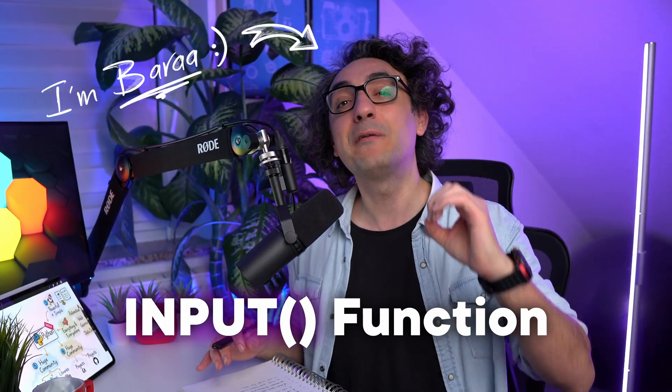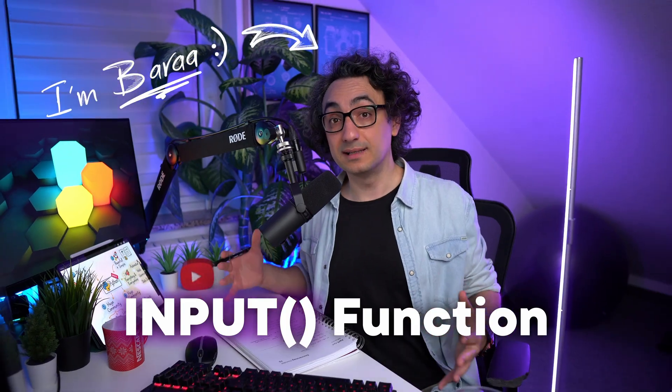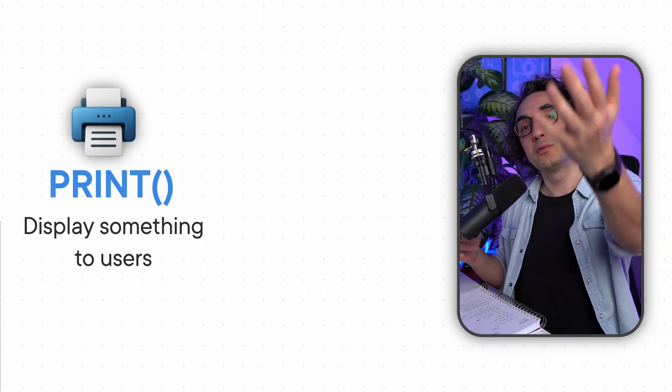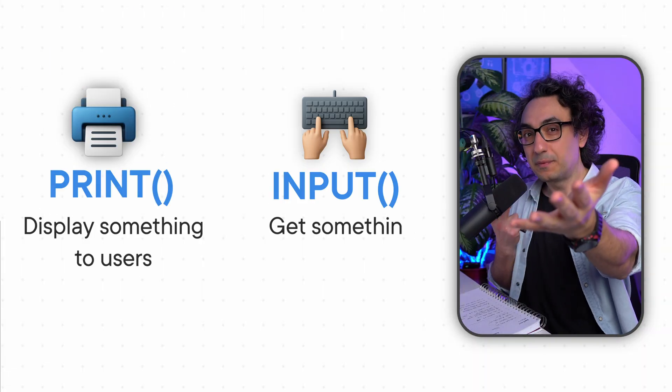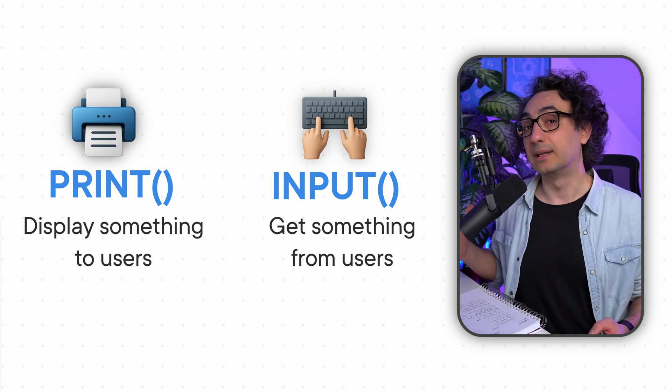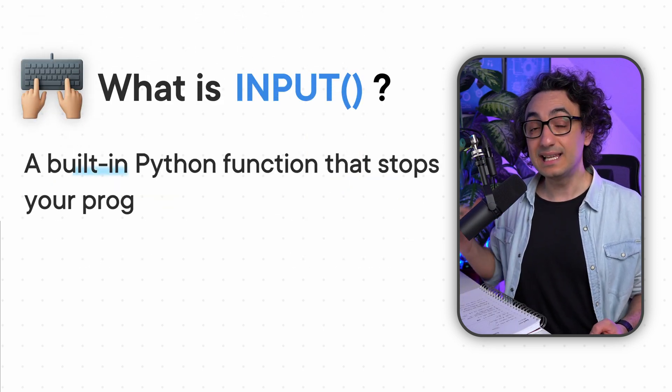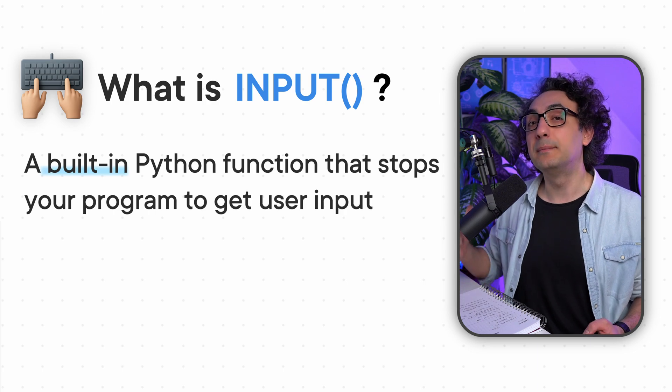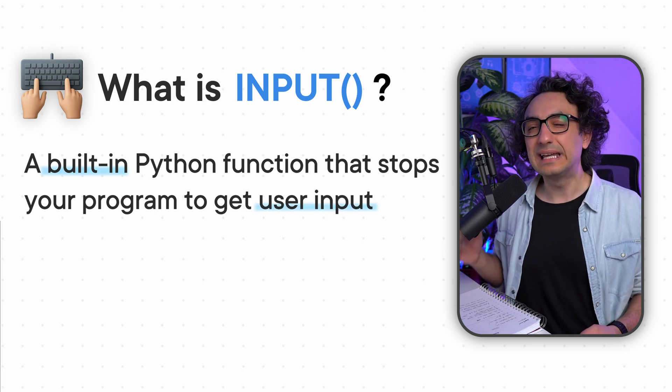Now we're going to talk about the second most important function in Python: the input. So far, we have learned we can use print in order to show something to the user, but now we're going to flip things and get something back from the user. For that, we can use the input function — a built-in Python function that lets you get input from the user, and it is used in almost any application or website.